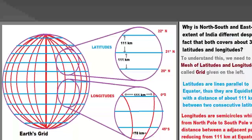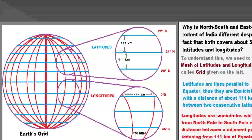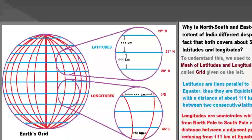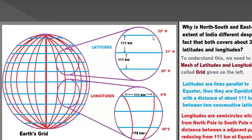To understand this, we need to look at the grid of latitudes and longitudes shown on the left. Latitudes are lines lying parallel to the equator, and thus they are equidistant — with a distance of about 111 kilometers between two consecutive latitudes. That means between two successive latitudes, the distance is always about 111 kilometers.